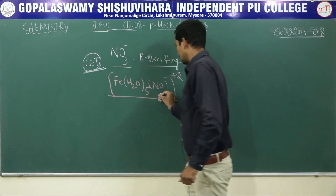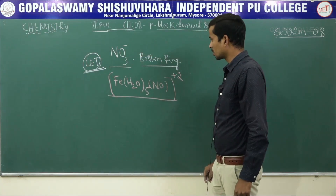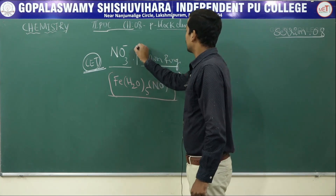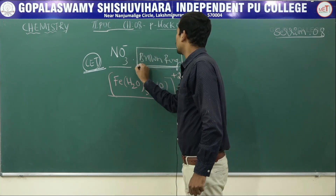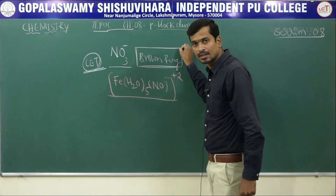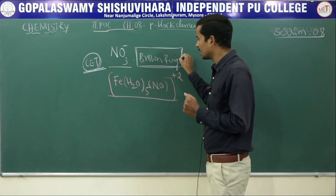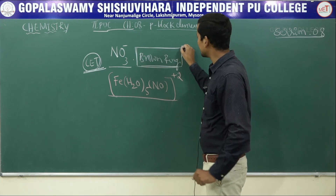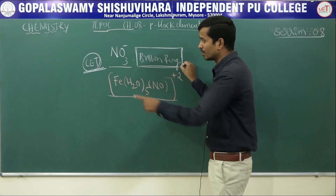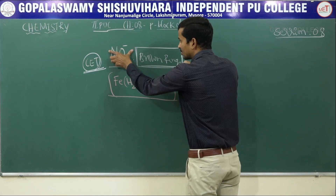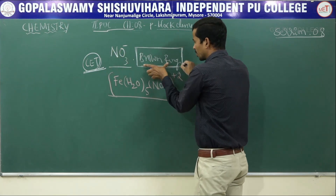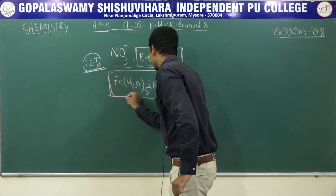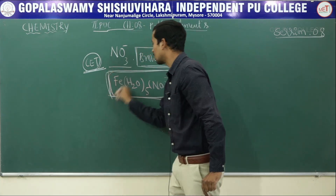The brown ring test is a confirmation test for the nitrate ion. It is based on the formation of a pentaaquo nitrosonium iron(II) complex. This brown ring is formed due to the formation of that iron complex.